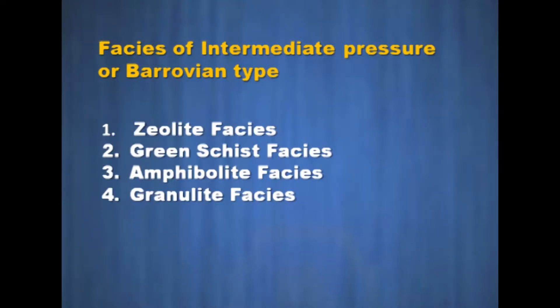The facies of intermediate pressure or Barrovian type are listed below in order of increasing temperature and pressure of metamorphism: zeolite facies, greenschist facies, amphibolite facies, and lastly granulite facies. The rocks of this facies series belong to the very high rank of metamorphites in which muscovite is no longer stable and consequently potassium feldspar coexists with aluminosilicate polymorphs, that is, sillimanite.